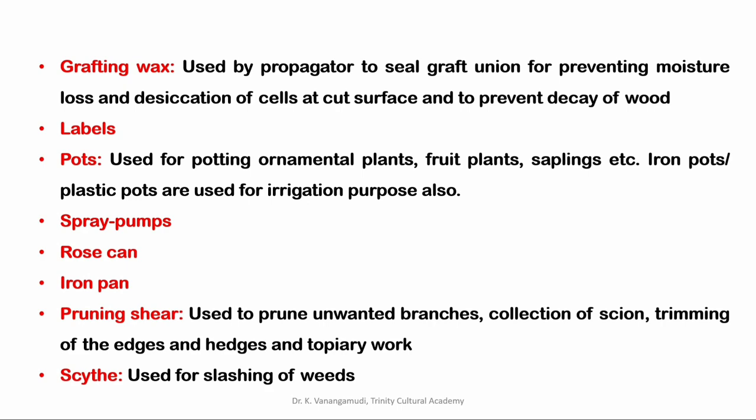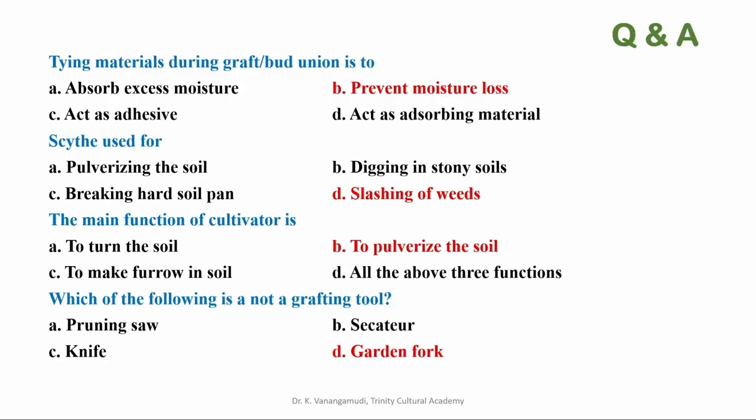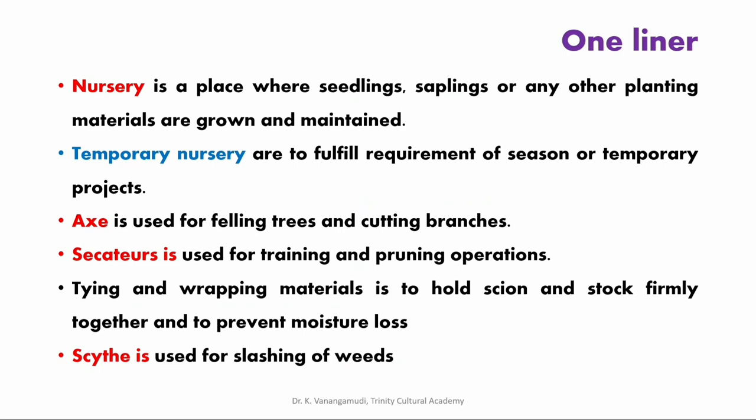Let us see the possible expected questions and answers. First: the tying materials during graft or bud union are used to — correct answer: option B, prevent moisture loss. Second: syat is used for — correct answer: option D, slashing of weeds. Third: main function of cultivator is — correct answer: option B, to pulverize the soil. Final: which of the following is not a grafting tool — correct answer: option D, garden fork.